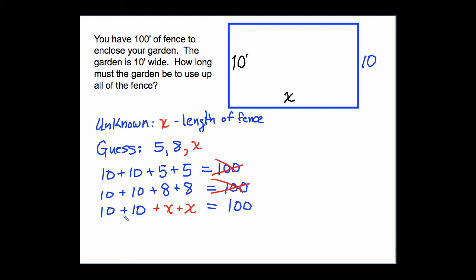If we simplify this equation, 10 plus 10 is 20. x plus x is 2x, and that equals 100. There's our equation, and that's what we need to solve.